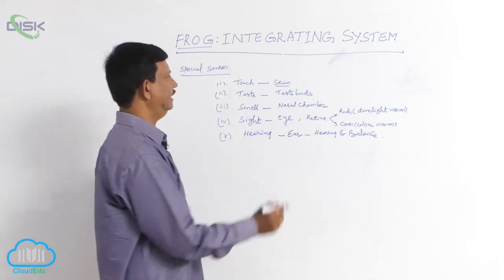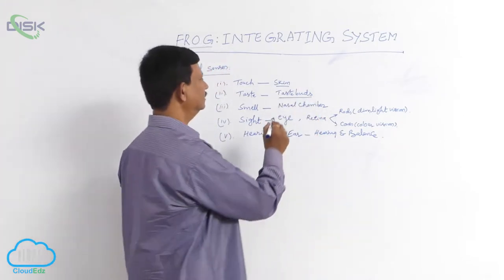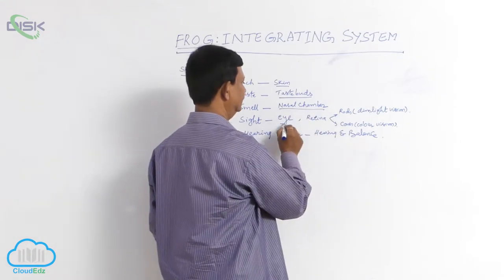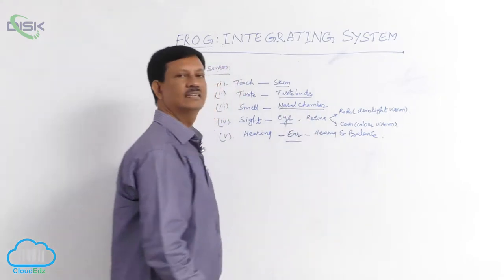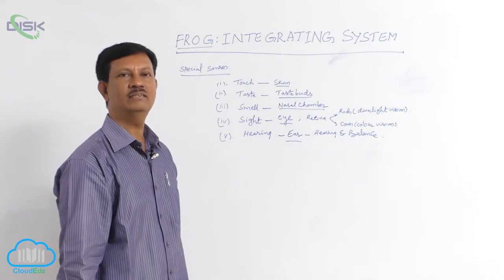taste buds, nasal chamber, eyes, and ears. These are the five sense organs found in frogs.